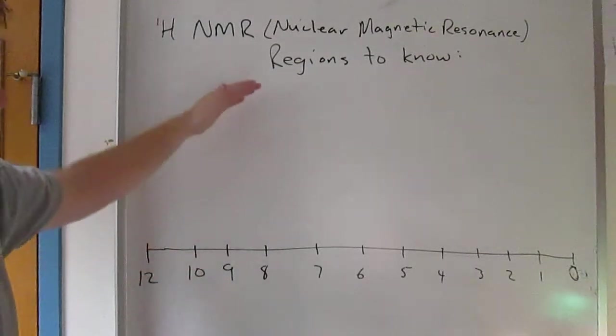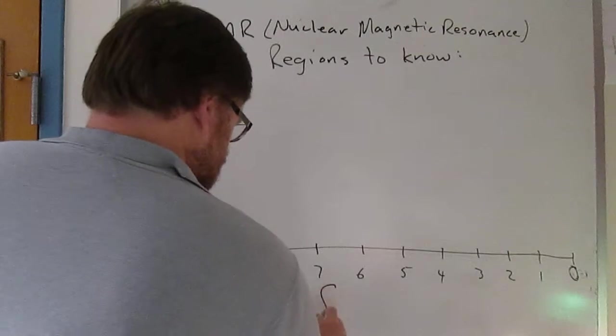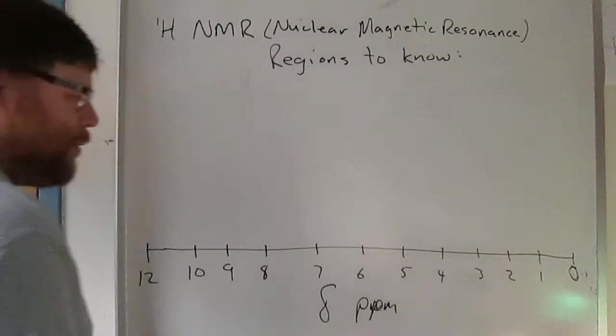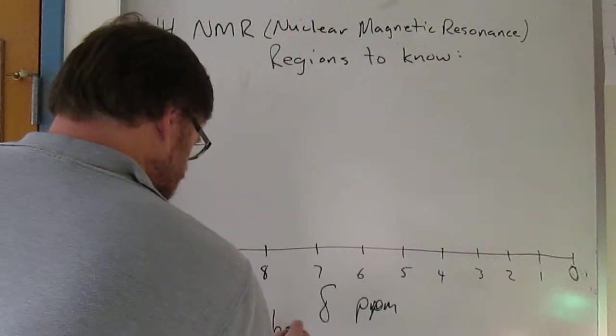You're going to have intensity plotted versus energy. Down here on the x-axis, we're going to have something called chemical shift, given in parts per million chemical shift from TMS.